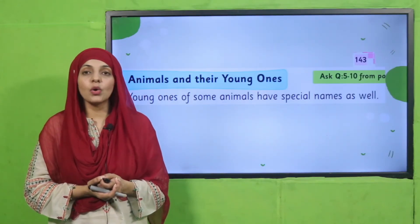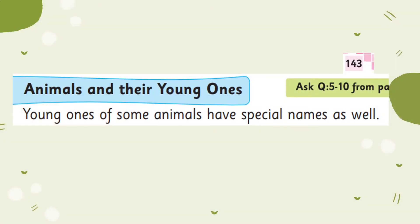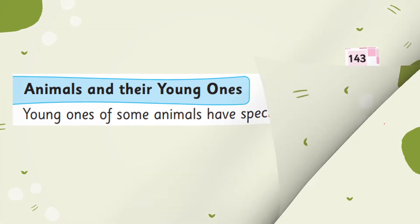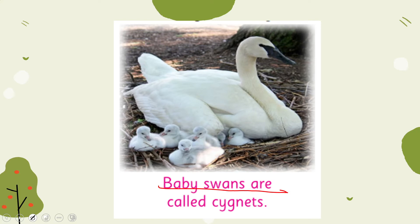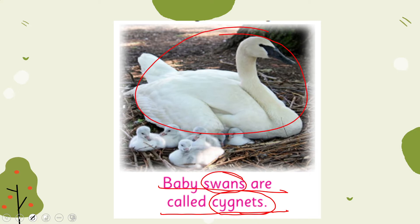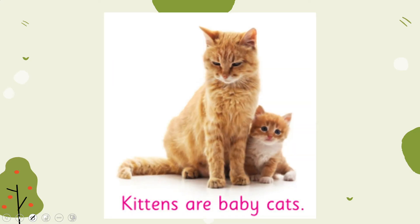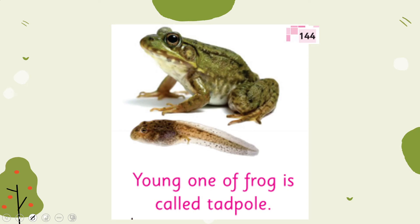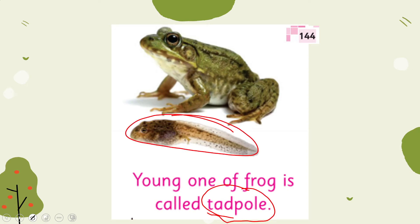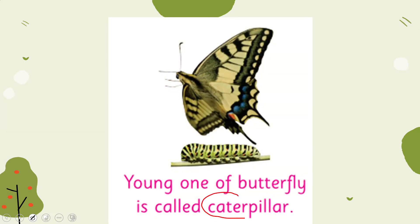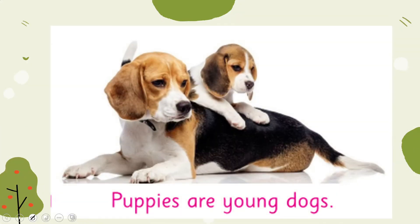I hope everybody has opened the page. Put your fingers where I read. The topic is: Animals and Their Young Ones. Young ones of some animals have special names. Baby swans are called cygnets. This is a baby frog and it is called a tadpole. A butterfly's baby is called a caterpillar. Dog babies are called puppies. Every animal has a different name for its young ones.